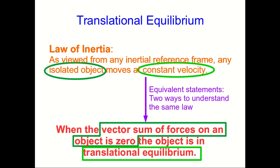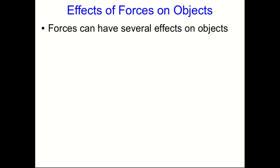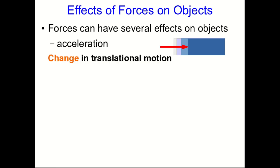So in other words, these two laws here are just equivalent statements. They're two ways to understand the same law. One reason to understand translational equilibrium is to avoid being fooled in situations where objects aren't accelerating, even though there are many forces acting on them. And so it's good to look at what else forces can do to objects. We already know that forces can cause objects to change their velocity, or in other words, accelerate. And so that's a change in the translational motion of the object.